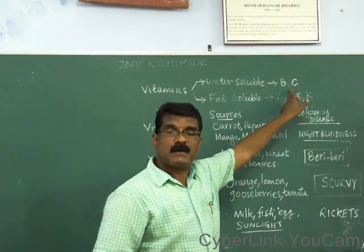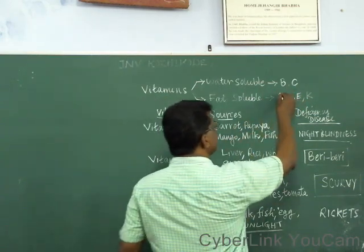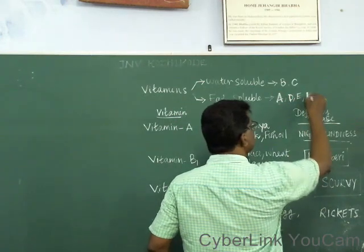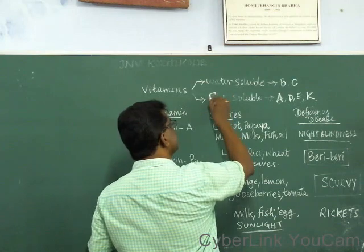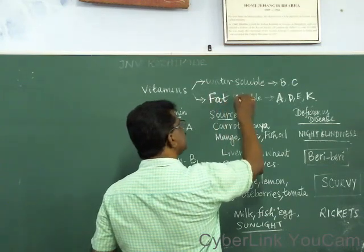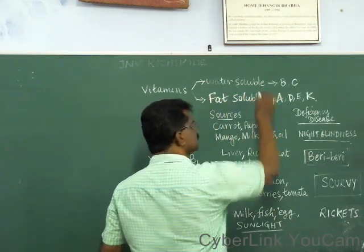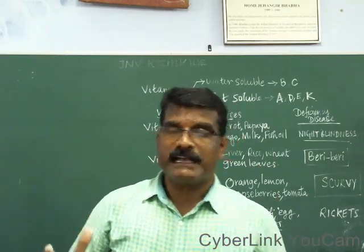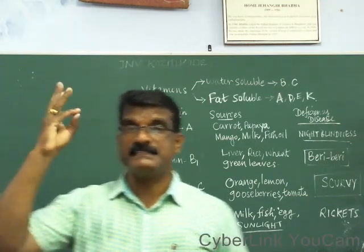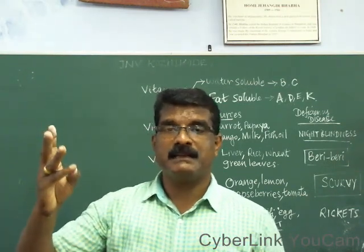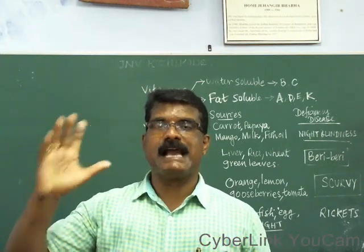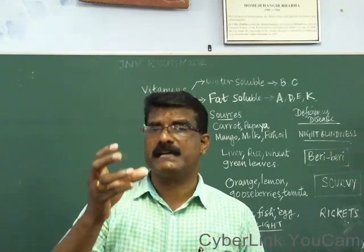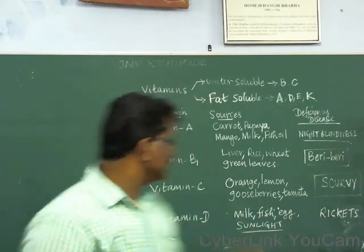Vitamin B and C are water-soluble vitamins. Vitamin A, D, E, and K are fat-soluble vitamins. So, there are two groups of vitamins: water-soluble and fat-soluble. Vitamin B and C are water-soluble; Vitamin A, D, E, and K are fat-soluble. Now, let us discuss a few vitamins and their deficiency diseases.